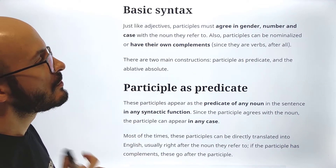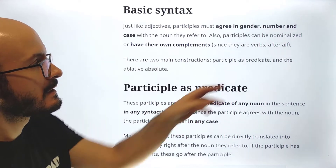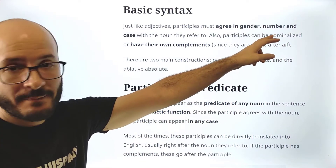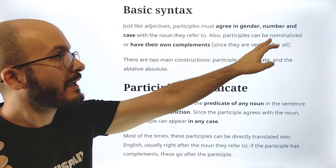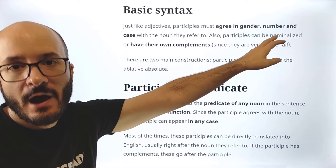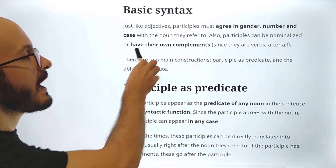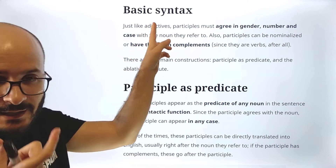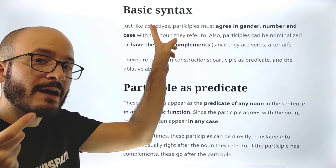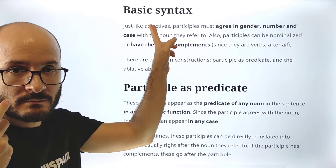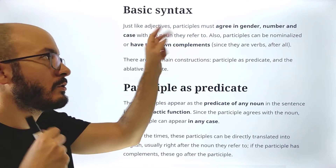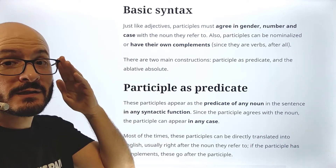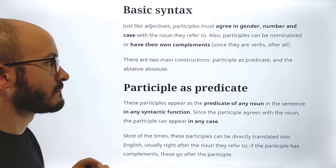Also, participles can be nominalized or have their own complements. Nominalized means that a participle, which is an adjective, can work as a noun. Or they can have their own complements, because after all, participles come from verbs, and verbs can have complements. So participles can have their own complements in the same way that verbs have complements.